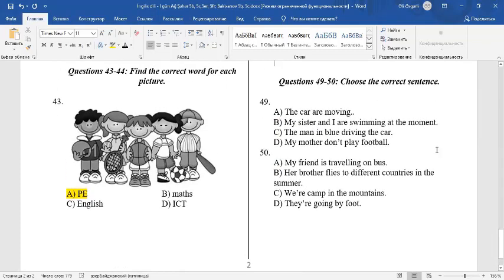49. Choose a correct sentence. A. The car are moving. It's an incorrect sentence. We must say the car is moving. B. My sister and I are swimming at the moment. It's a correct sentence. My sister and I, we are swimming at the moment.